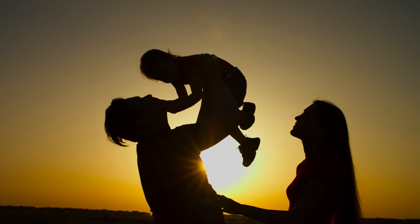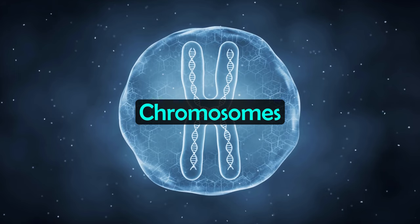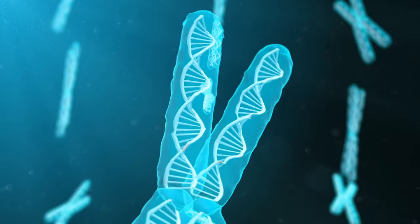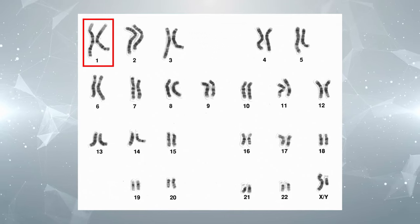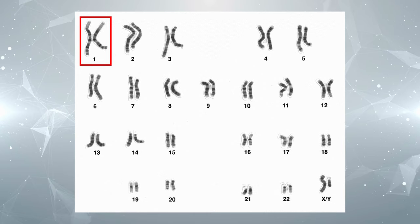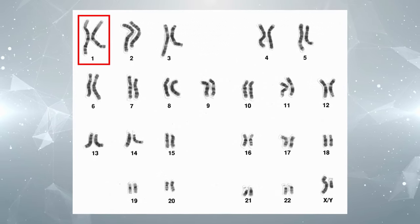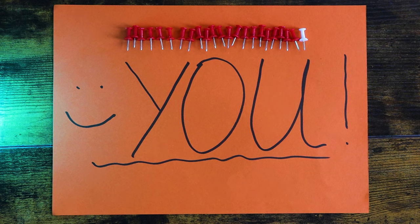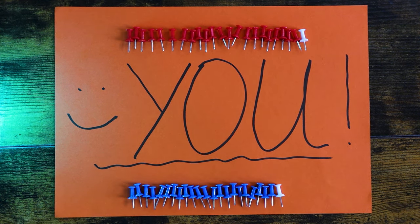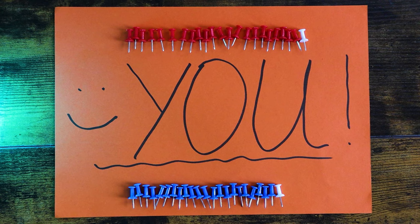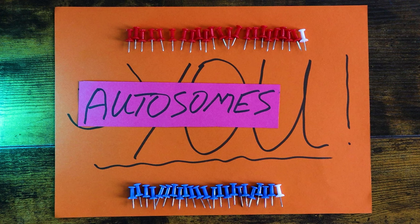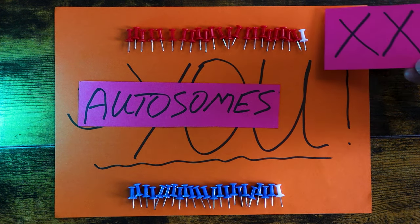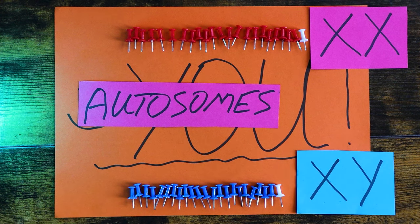Segments of DNA that carry genetic information are called genes. Chromosomes are thread-like structures made of protein and a single molecule of DNA that serve to carry the genetic information from cell to cell. In humans, each cell normally contains 23 pairs of chromosomes, for a total of 46. You inherit 23 chromosomes from your mother and 23 from your father. These chromosomes contain your genetic information, and 22 of these pairs look the same in both males and females — they are known as autosomes. The 23rd pair, the sex chromosomes, differ between males and females. Females have two copies of the X chromosome, while males have one X and one Y chromosome.